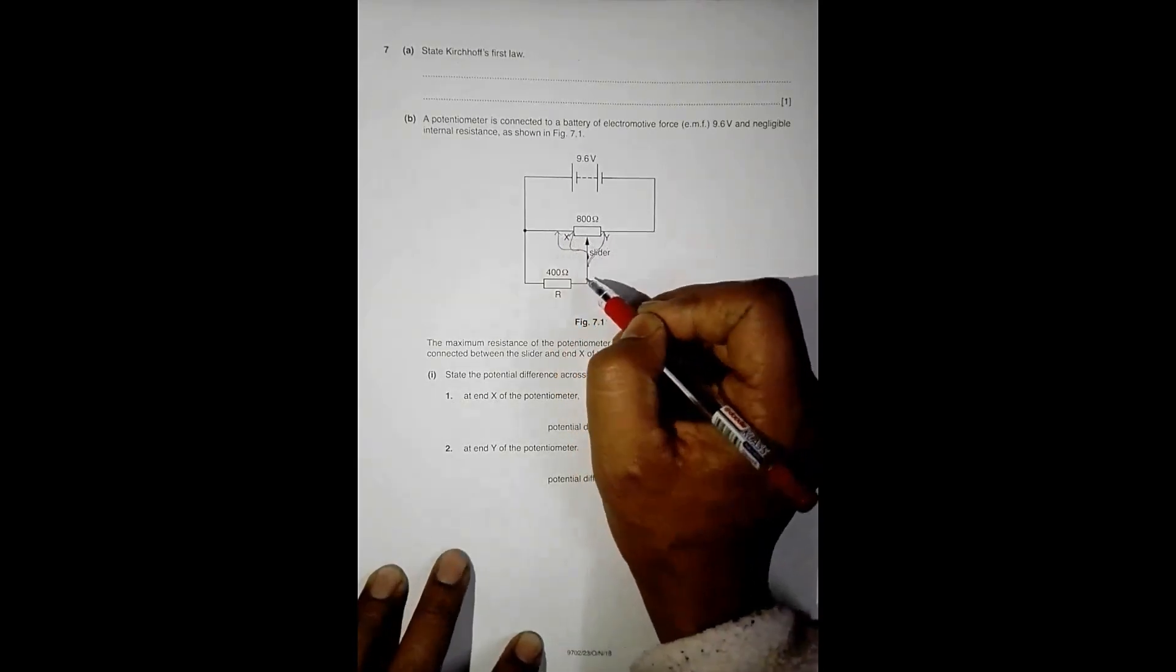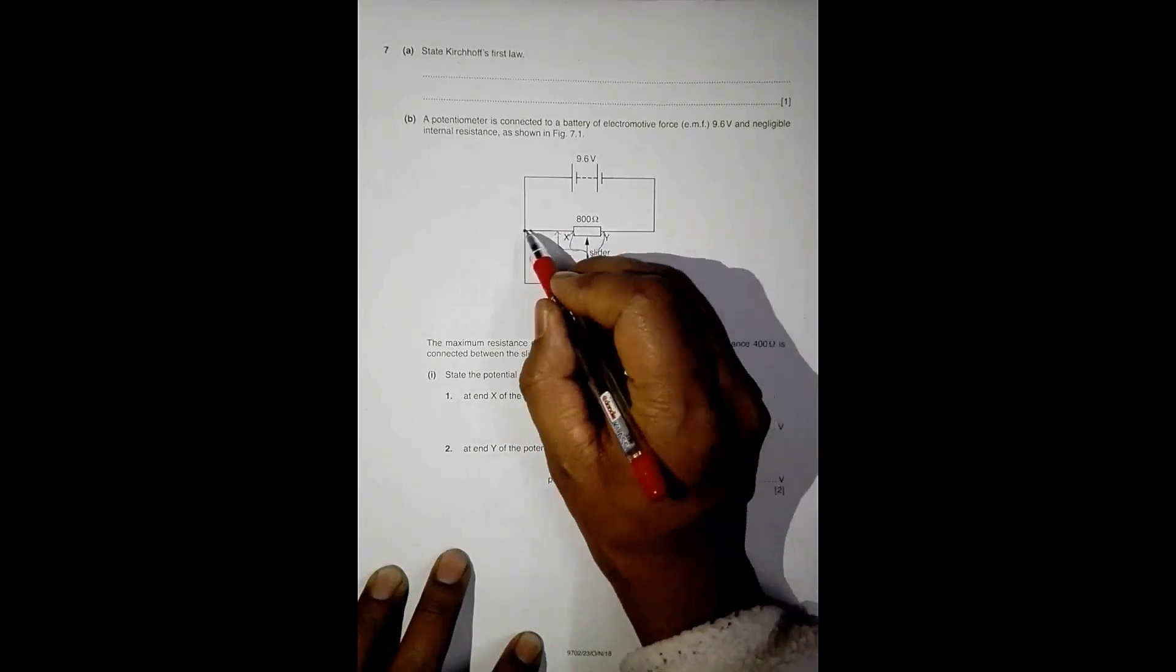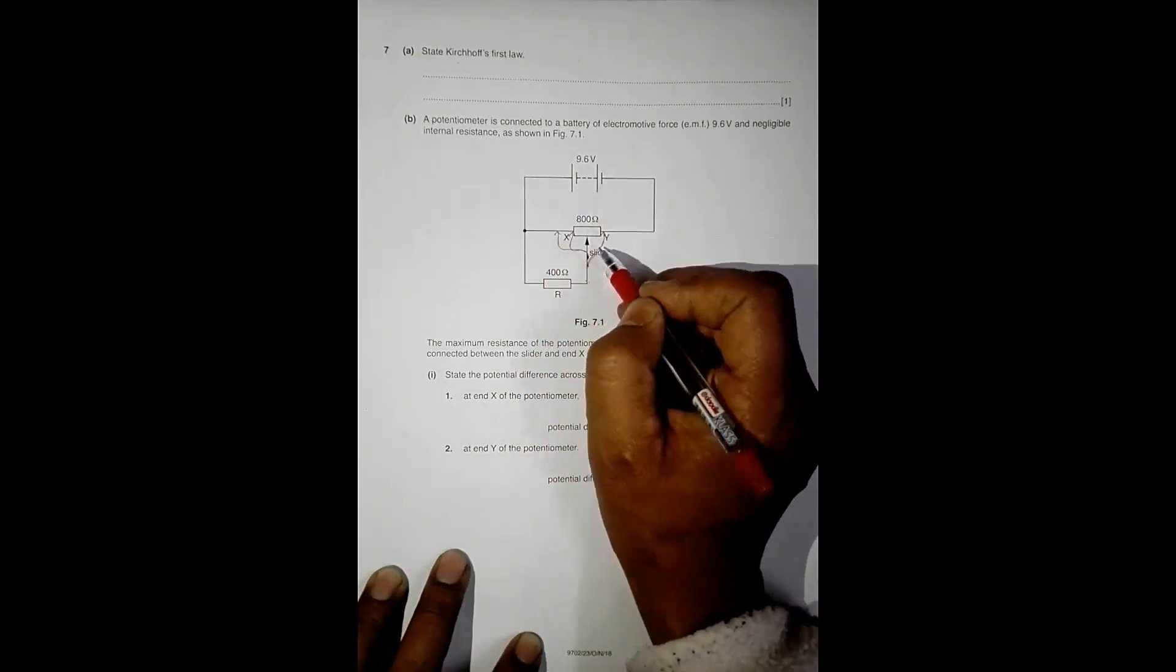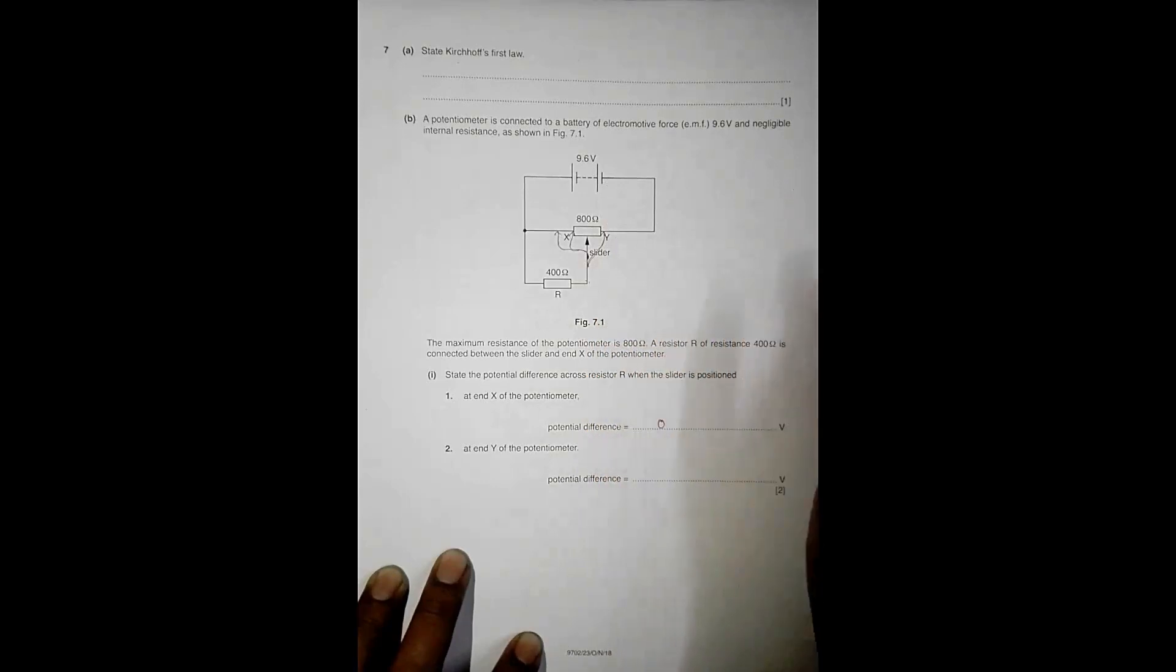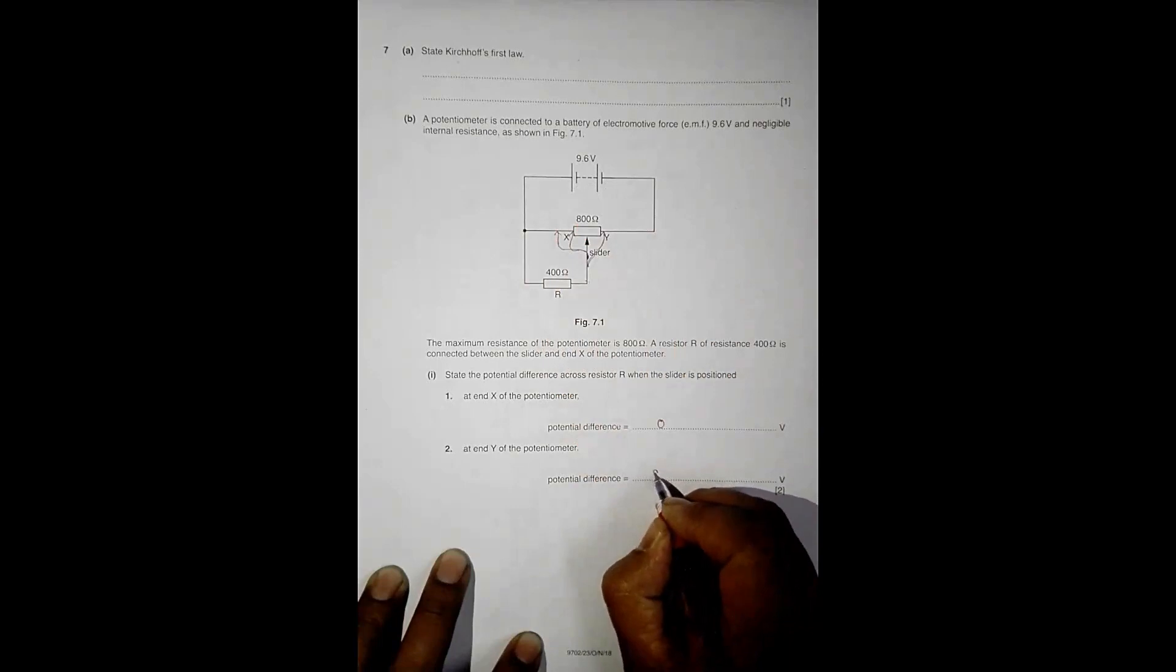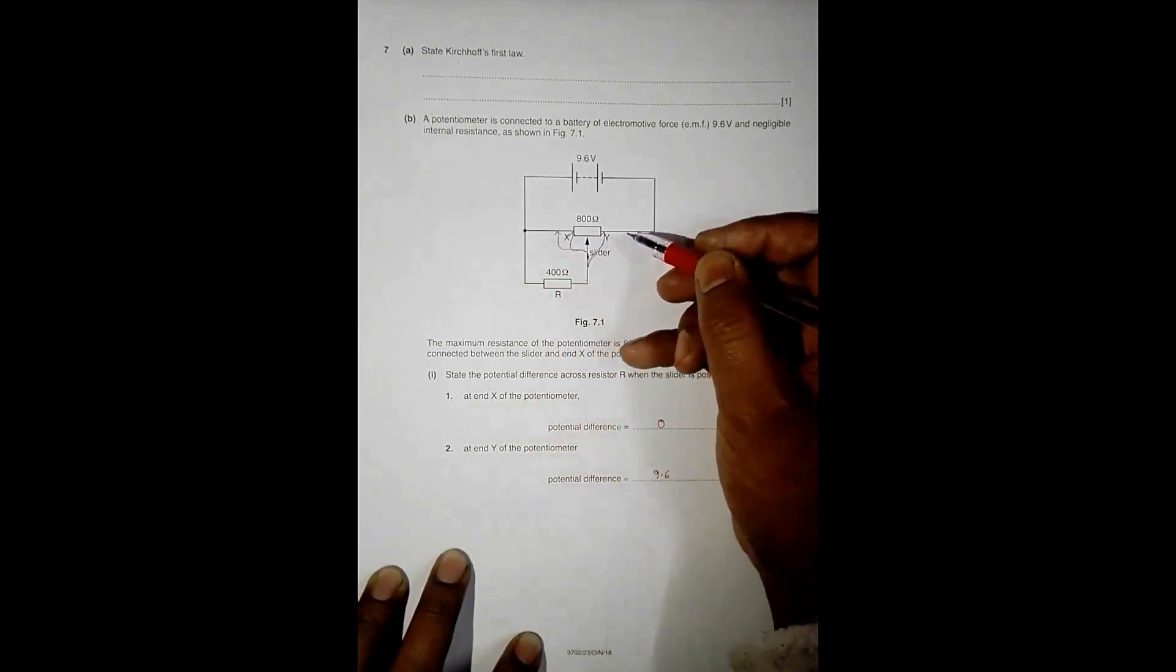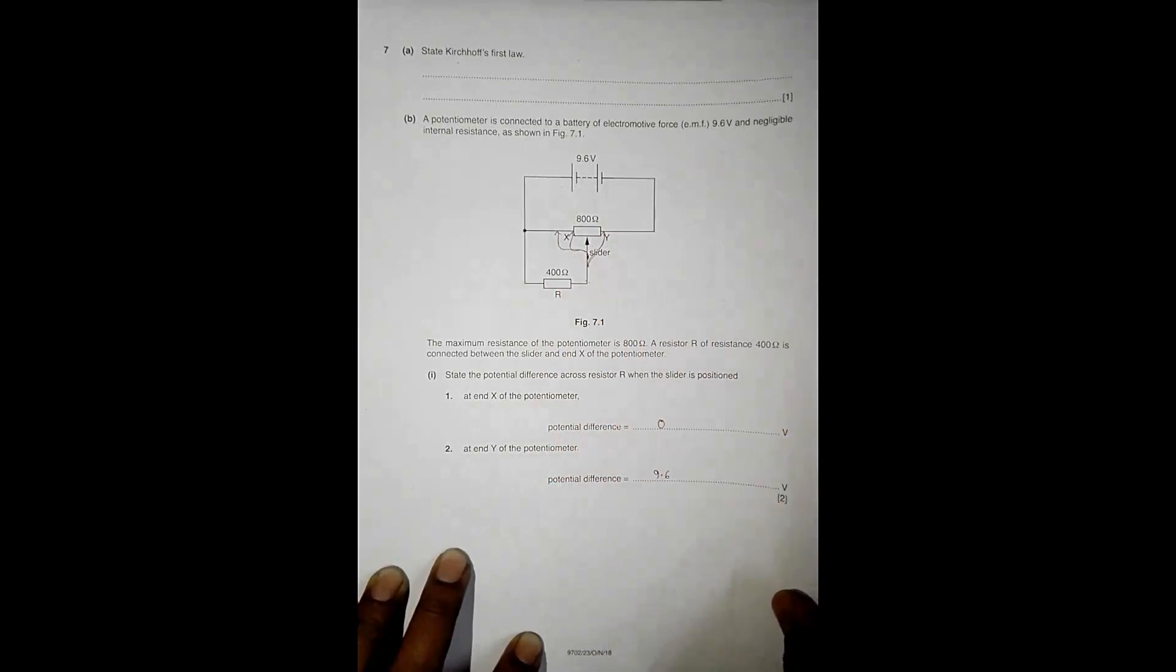The connection of this resistor is from here to here. Here means this point because of no resistor here, and here means this point. So it is like connecting the meter or the device across the ends of the cell, so it should be equal to 9.6 volts. So here zero volts because of no resistor, and here it is 9.6 because it is connecting right across the source.